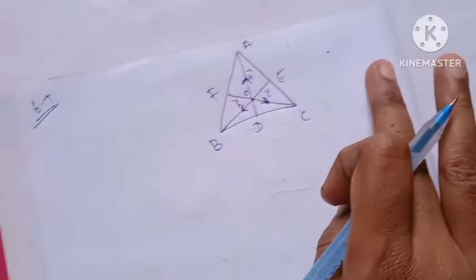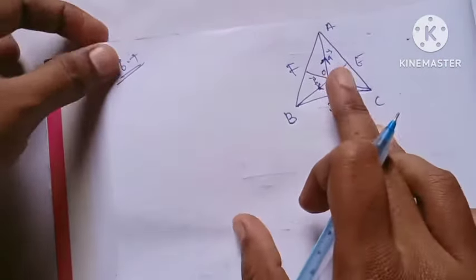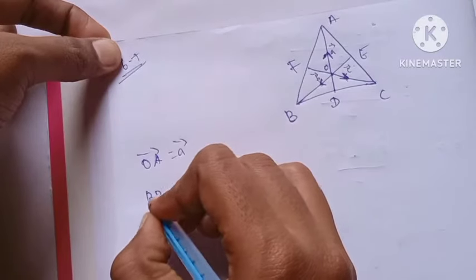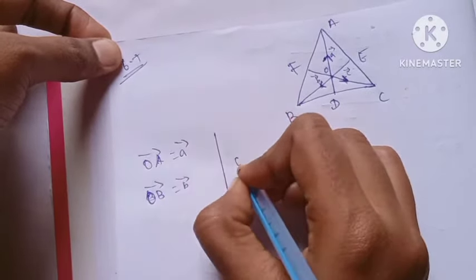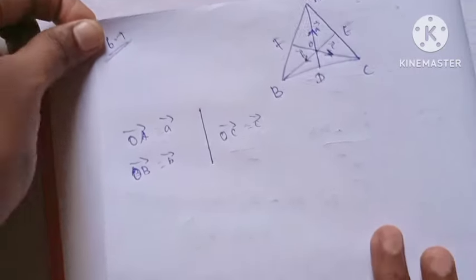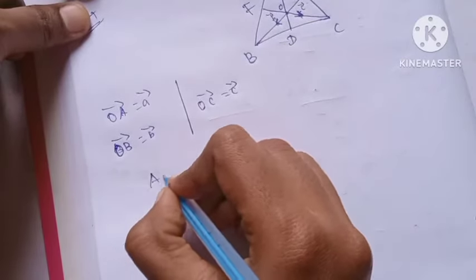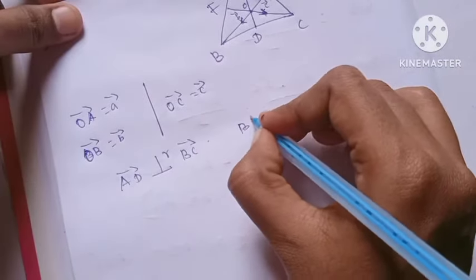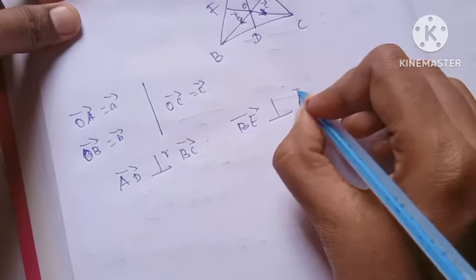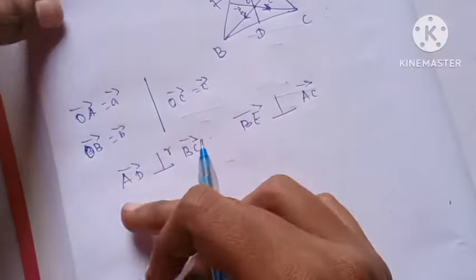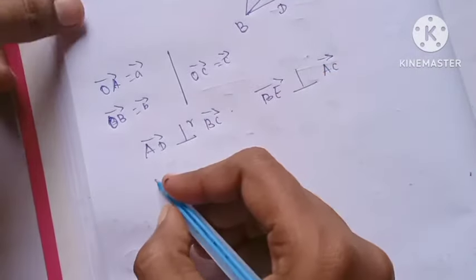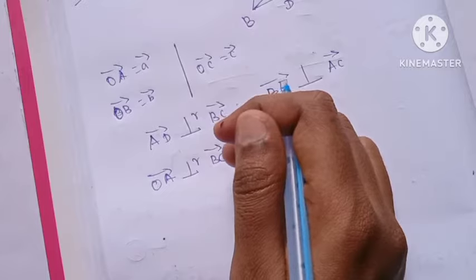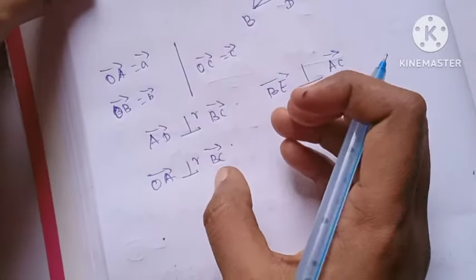Let's take vector OA, vector OB, vector OC. AD is perpendicular to BC vector, BE is perpendicular to AC vector. We know AD perpendicular to BC. If you have two vectors perpendicular, what is the dot product?